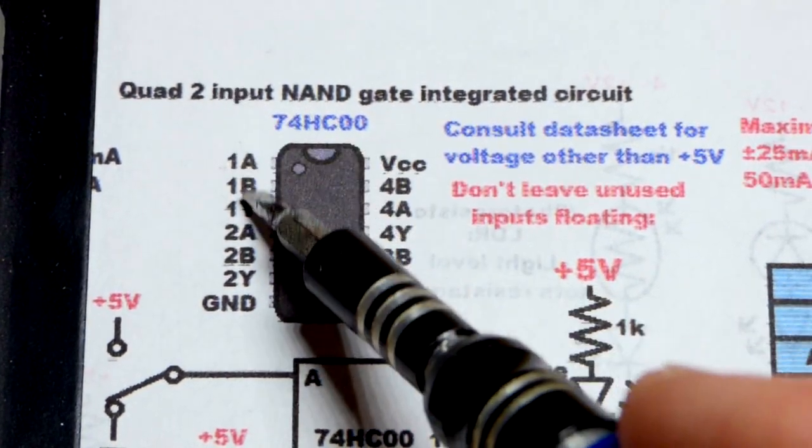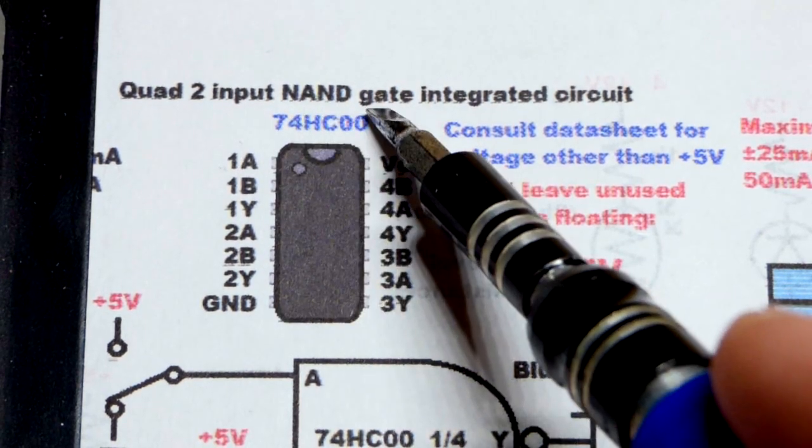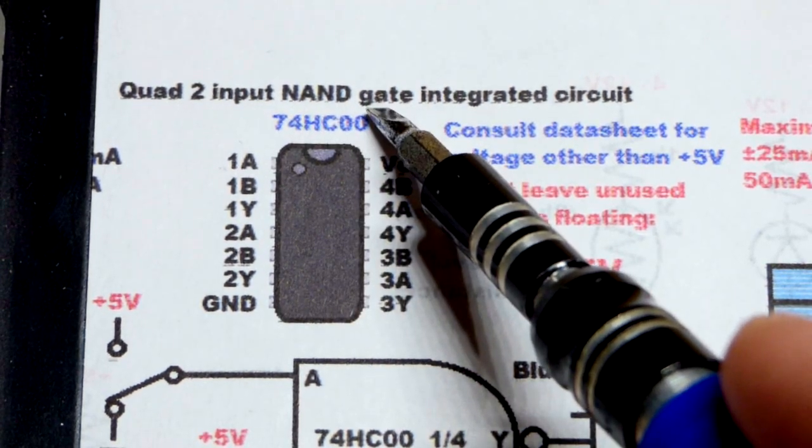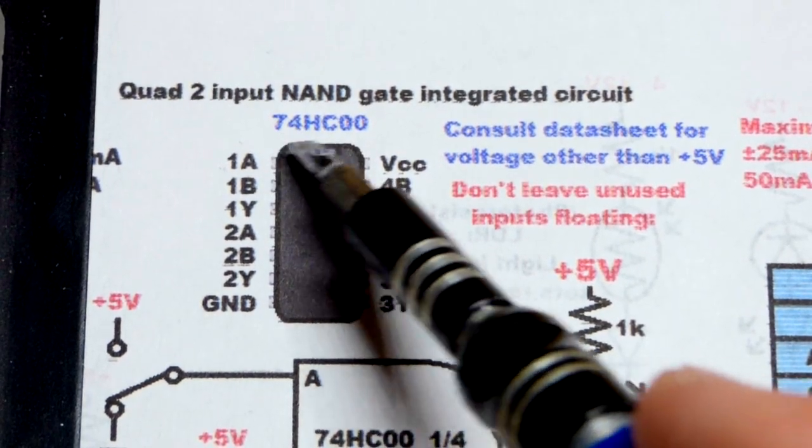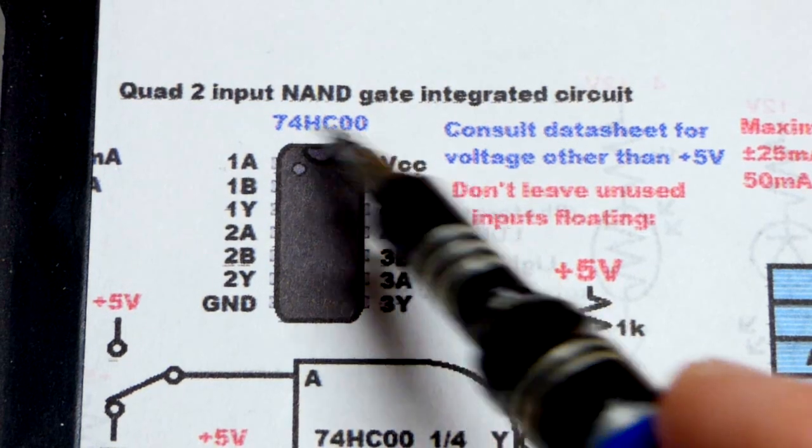Two inputs. So there you can see A and B are the inputs. NAND logic gate. So we'll come to that coming up. And it's the integrated circuit, as I said before. So that's the 7400 integrated circuit.